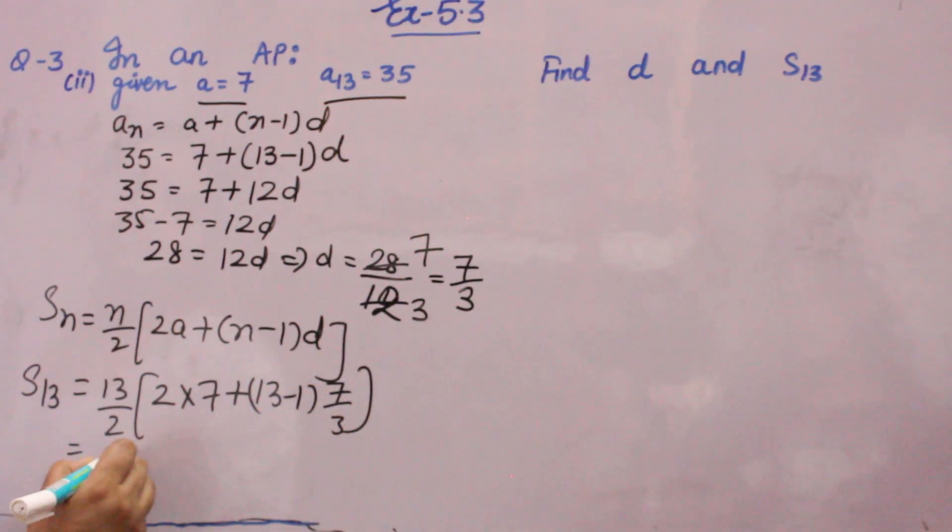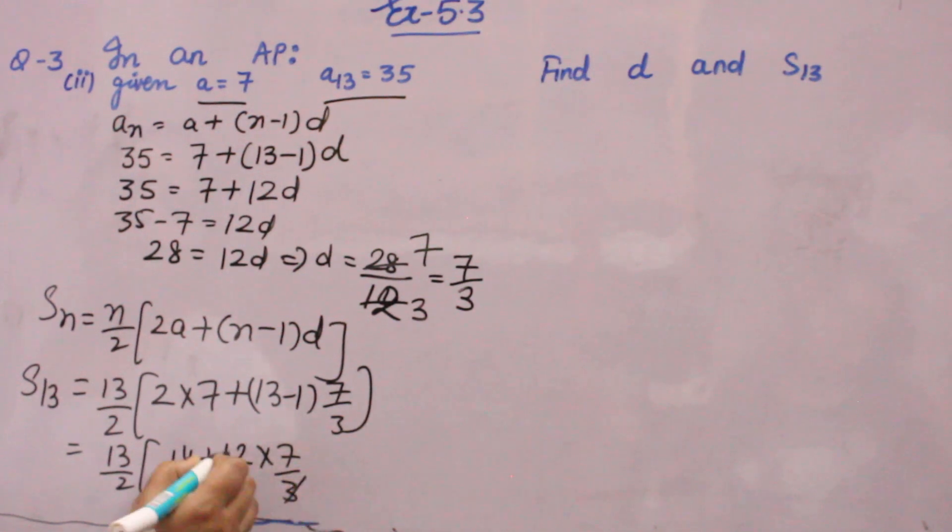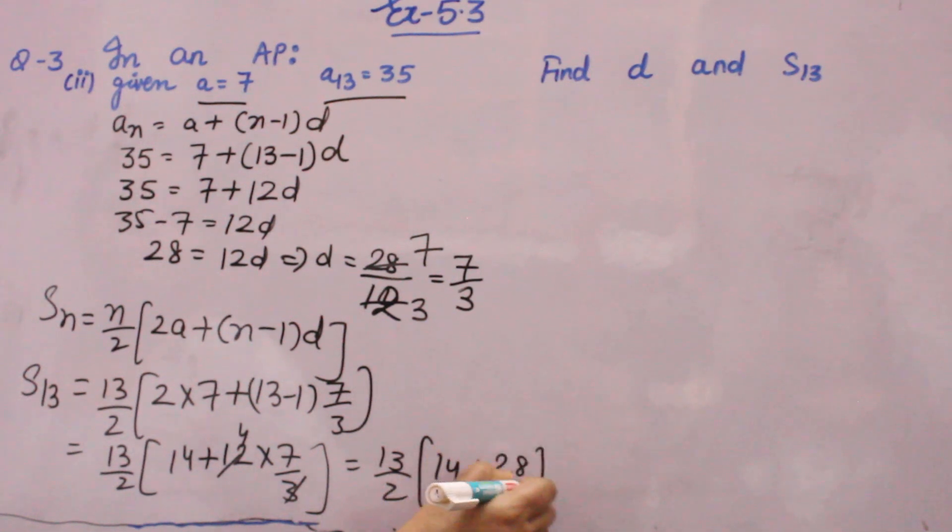So 13 by 2 into 2 into 7, 14 plus 13 minus 1 is 12, 12 into 7 by 3. You will simplify it, because plus and multiply is there, by BODMAS you will firstly have to solve multiply. So you will get 13 by 2, 14 plus 7, 4 times 7 is 28, equal to 13 by 2 into 14 plus 28 will come 42.